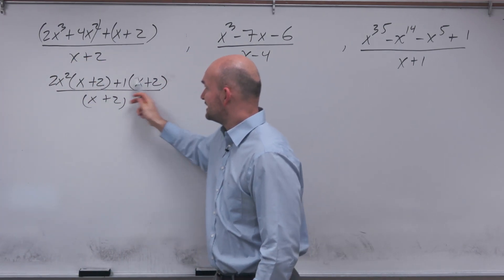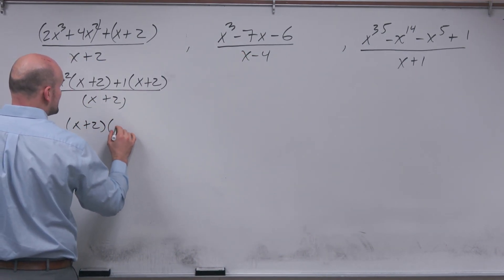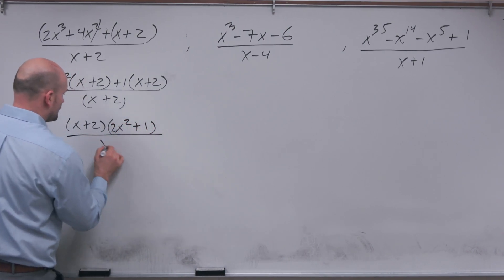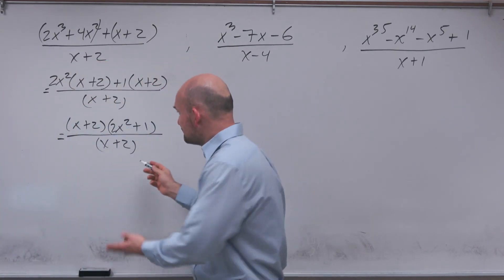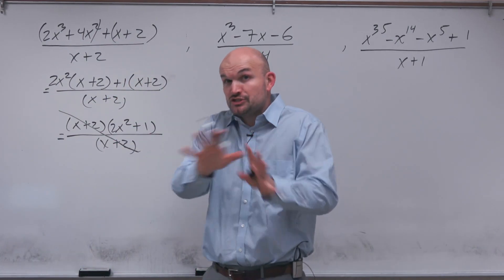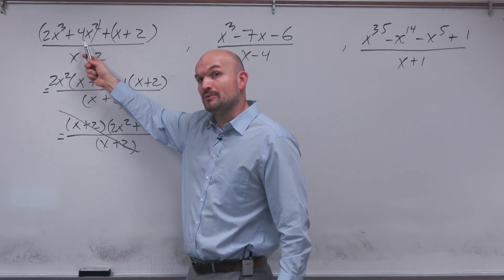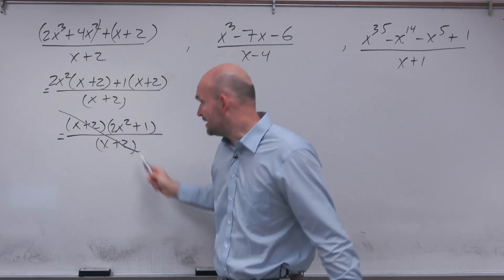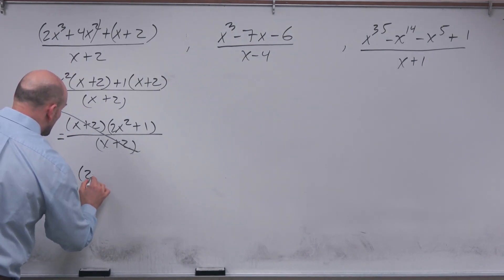What I'm going to do is group my first two terms, and I'm going to factor out the GCF of my first group and my second group. My first group, I can factor out a 2x squared, and that's going to leave me with x plus 2. Over here, I can't really factor anything else except out a 1. So I'll factor that out, and then I'll be left with x plus 2 all over x plus 2. I can factor out the x plus 2 because they both share it. So that's going to leave me with x plus 2 times 2x squared plus 1 all over x plus 2.